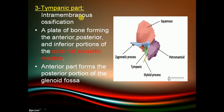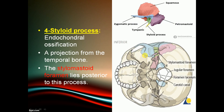The tympanic part undergoes intramembranous ossification. It is a plate of bone forming the anterior, posterior, and inferior portions of the external acoustic meatus. The anterior part contributes to the glenoid fossa, helping form the temporomandibular joint. The styloid process undergoes endochondral ossification, and the stylomastoid foramen lies posterior to this process.